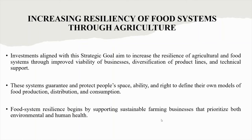Increasing resiliency of food systems through agriculture. Investments align with the strategic goal to increase the resilience of agricultural and food systems through improved viability of business, diversification of product lines and technical support. Resilient food systems can withstand short- and long-term shocks and stressors, such as natural disasters and extreme weather events. They are described as diverse, integrated, self-regulating, adaptive, inclusive and equitable. Examples of food system resilience, including food sovereignty, are found globally, often led by civil society and indigenous people. These systems guarantee and protect people's space, ability and right to define their own models of food production, distribution and consumption. Food system resilience begins by supporting sustainable farming businesses that prioritize both environmental and human health.